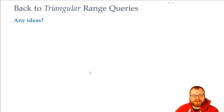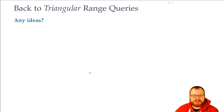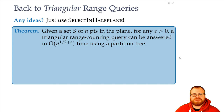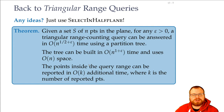We get this as a theorem: if we have a set of n points in the plane and any given epsilon greater than zero, then we can do our triangular range counting query in order of n to the 1 over 2 plus epsilon time using our partition tree. We can build it in order of n to the 1 plus epsilon time, and we use linear space. Additionally, we can report all points in the query range in order of k additional time, where k is the number of reported points.